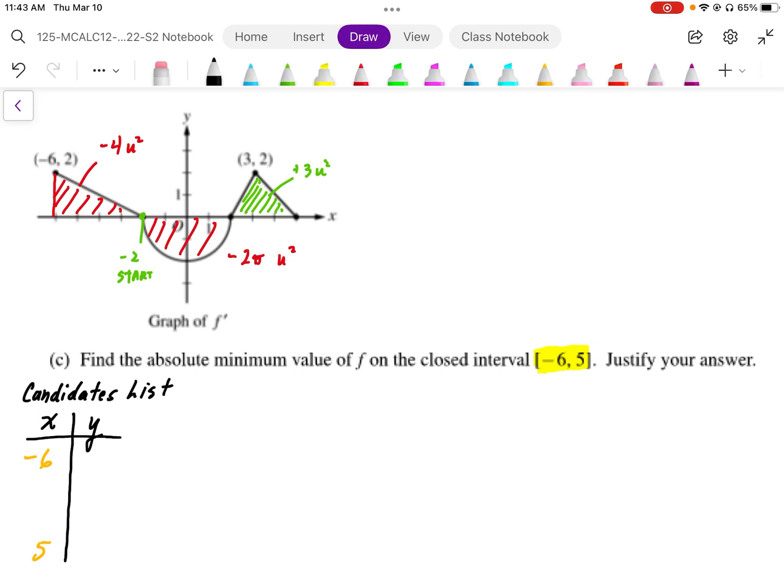We're going to justify this answer based on the candidates list. We're going to make a candidates list, and that candidates list needs to include the endpoints, so negative 6 and positive 5, which I put in here.